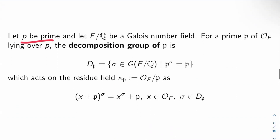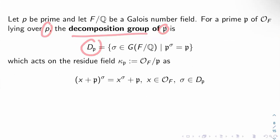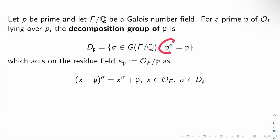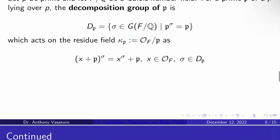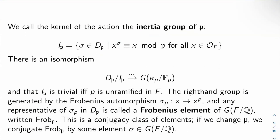To take a Frobenius of a prime in a number field: let P be an ordinary prime, and let F over Q be a Galois number field. For a prime 𝔭 of the ring of integers O_F lying over P, the decomposition group D_𝔭 is the set of all sigma in Gal(F/Q) that fix 𝔭 set-wise. This is easily seen to act on the residue field kappa_𝔭 = O_F mod 𝔭, where sigma acts on a coset x + 𝔭 by acting on the representative x.